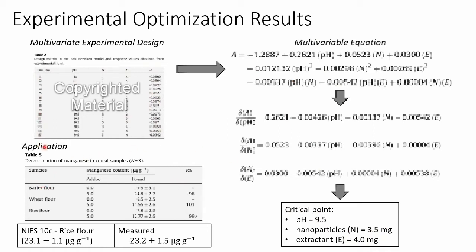They also look at an application of actually measuring manganese with barley, wheat, and rice flour. The ICP calculates a manganese content and they translate that into micrograms per gram — ICP actually gives micrograms per liter of sample. They also compared their procedure to a reference standard rice flour where the manganese content is already characterized, and their measurement was very close to the standard. In summary, they came up with an optimized procedure using magnetic nanoparticles coated with an absorbent that absorbs manganese, separates it from the system, and allows pre-concentration of samples for ICP-OES.